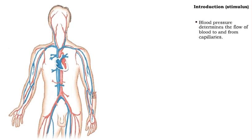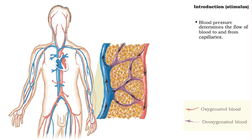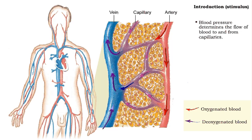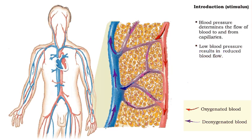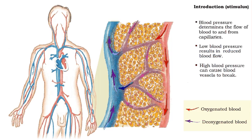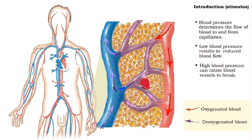Arterial blood pressure determines how much blood flows into the capillaries, where the exchange of nutrients and wastes between blood and body cells occurs. If the pressure is too low, not enough blood goes into the capillaries. If the pressure is too high, blood vessels can break, causing internal bleeding and possibly strokes.